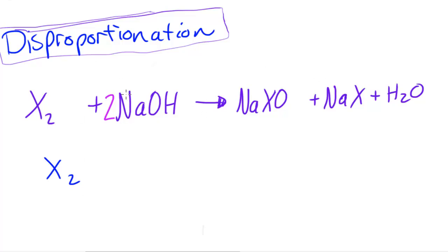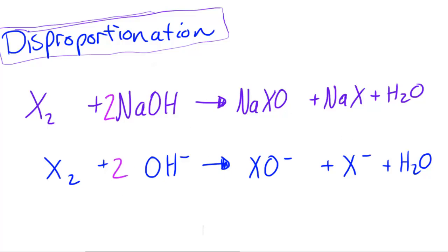So we've got 2 Na's on this side and 2 Na's on that side and they both cancel out when you're writing out the ionic equation. So X2 plus 2 OH minus react to produce XO minus plus X minus plus H2O. And you can see the charge is balanced as well on both sides of the equation.